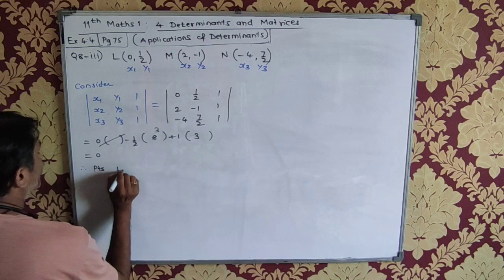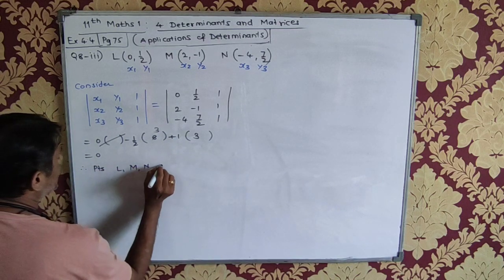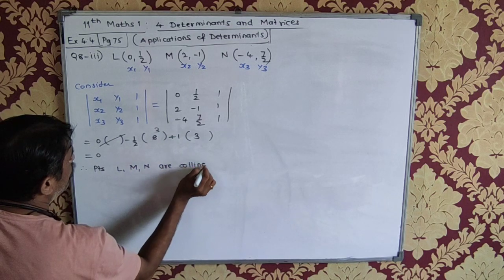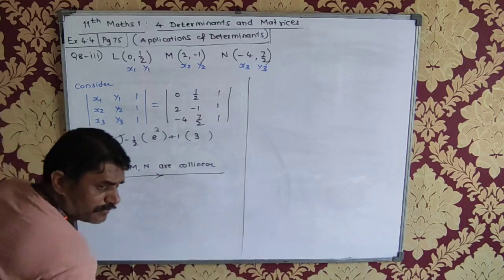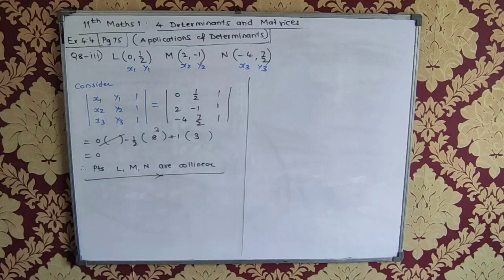And therefore, points L, M, and N are collinear. I hope this is clear to you. Anything else about that? Very clear? Okay.